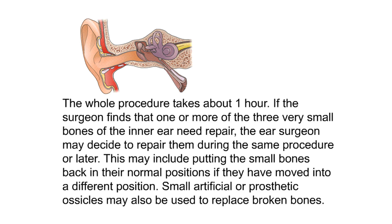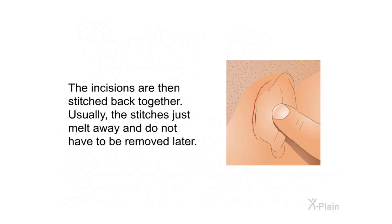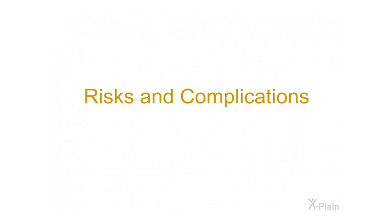The whole procedure takes about one hour. If the surgeon finds that one or more of the three small bones of the middle ear need repair, the ear surgeon may decide to repair them during the same procedure or later. This may include putting the small bones back in their normal positions if they have moved, or using small artificial prosthetic ossicles to replace broken bones. The incisions are then stitched back together — usually the stitches dissolve and do not have to be removed later.